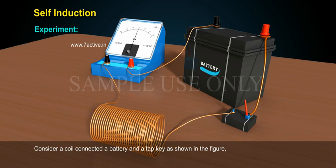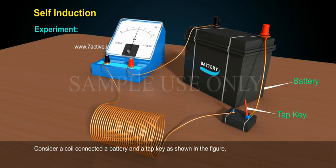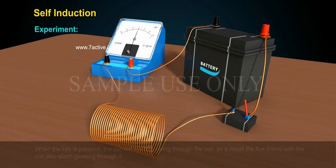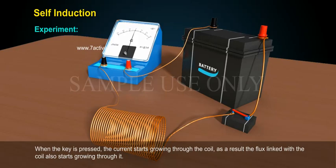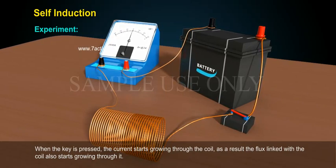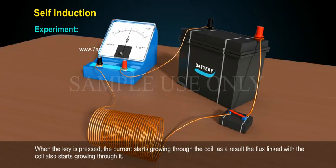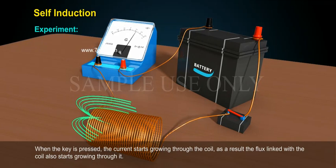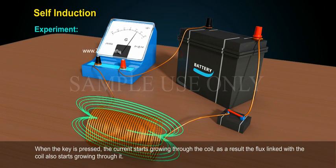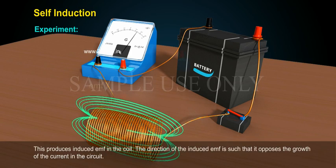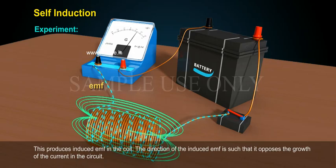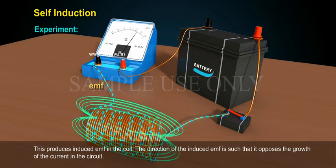Experiment: Consider a coil connected to a battery and a tap key, as shown in the figure. When the key is pressed, the current starts growing through the coil. As a result, the flux linked with the coil also starts growing through it. This produces an induced EMF in the coil, and the direction of the induced EMF is such that it opposes the growth of the current in the circuit.